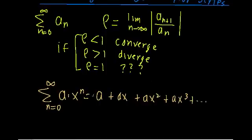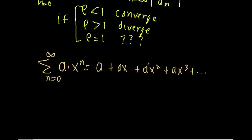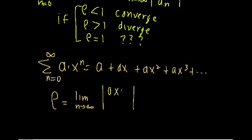Now we can see if this geometric series converges with the ratio test. So let's just do it out. We're going to say that rho equals the limit as n approaches infinity of the absolute value of one term, which is ax^{n+1}, over the term before it, which would just be ax^n.